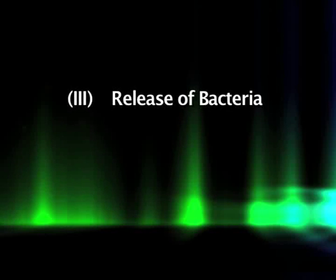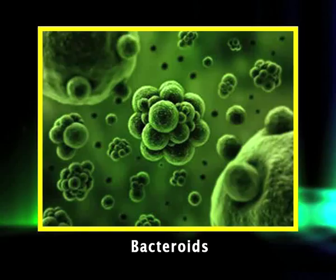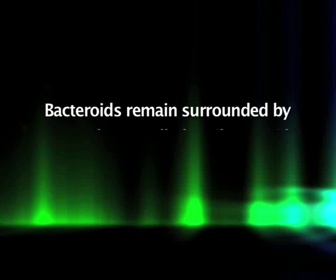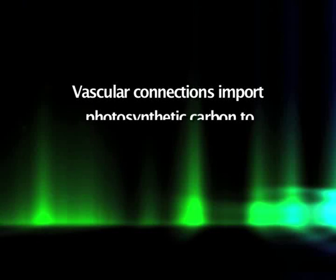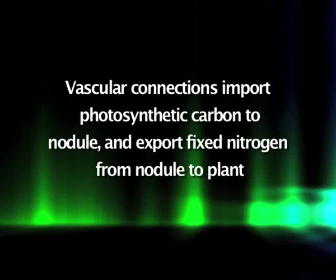After the formation of the infection thread, the third process begins: the release of bacteria. This is the final step in the infection process whereby the bacteria are released into the host cells. The membrane of the infection thread buds off to form small vesicles, each containing one or more individual bacteria. Shortly after release, the bacteria cease dividing, enlarge, and differentiate into specialized nitrogen-fixing cells called bacteroids. The bacteroids remain surrounded by a membrane called the peribacteroid membrane. As the nodule enlarges and matures, vascular connections are established to import photosynthetic carbon into the nodule and export fixed nitrogen to the plant.